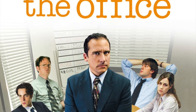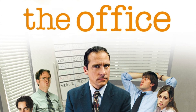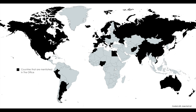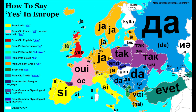Remember the hit NBC TV show The Office? Here are all the countries that were mentioned in The Office. How could they not mention Tuvalu? Here's an interesting map of how to say the word 'yes' in every European country: ya, si, oui, ja, da.